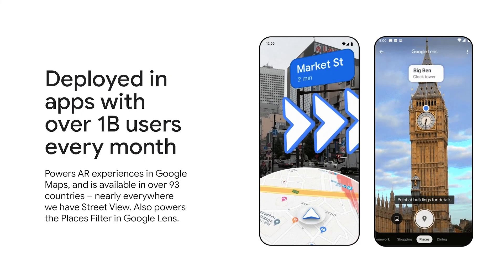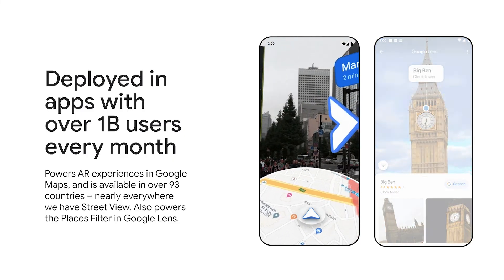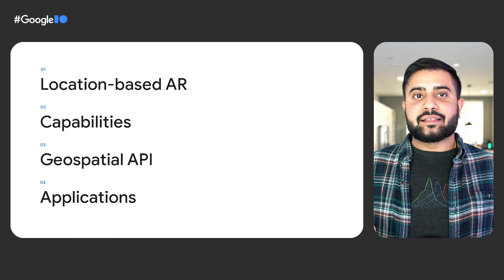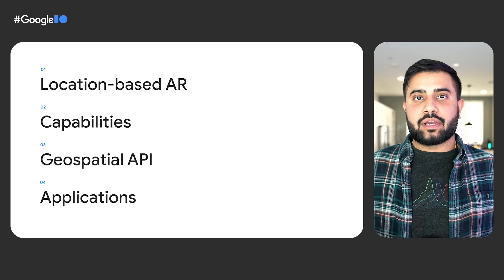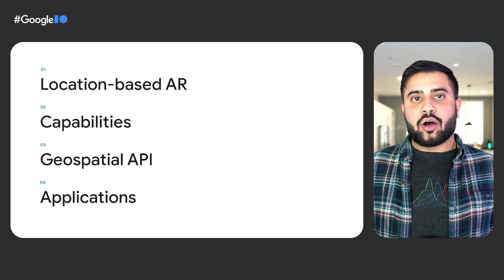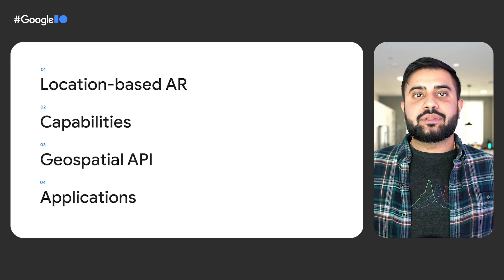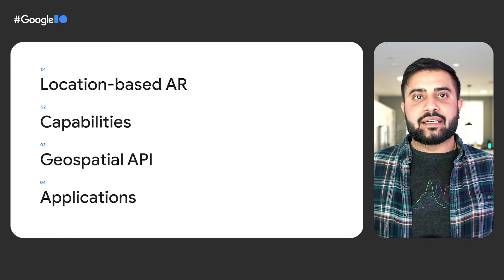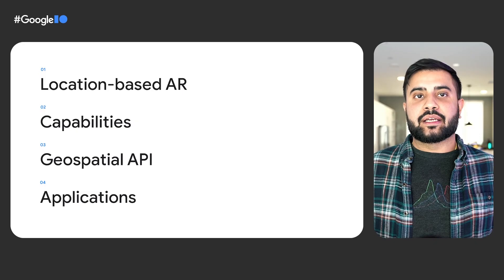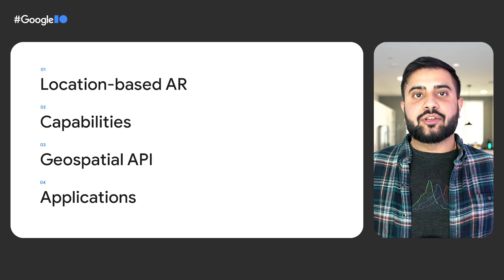This capability is available in over 93 countries across the globe, everywhere we have Street View. With that background in mind, let's get right into it. We'll start off by discussing different options for building location-based AR experiences. Then, we'll provide background on the technical capabilities on our roadmap, as well as walk you through the fundamentals of using this API and just how easy it is to get started. And finally, we'll share what our early partners are already doing with the Geospatial API to address a range of verticals and use cases.